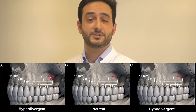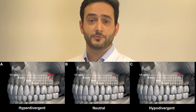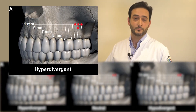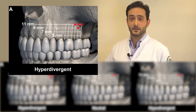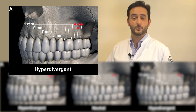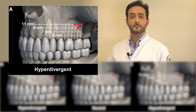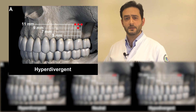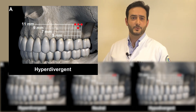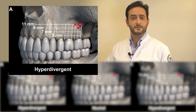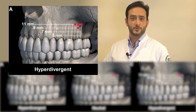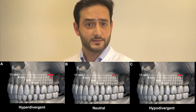In the hyperdivergent group, the safe sites found were between the first and second molars at 11 mm from the alveolar crest, the mesial root of the second molar at 9 mm and 11 mm from the alveolar crest, and the distal root of the second molar at 11 mm from the alveolar crest on both sides.